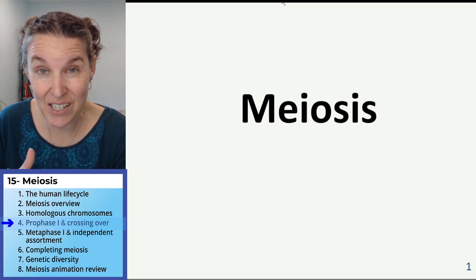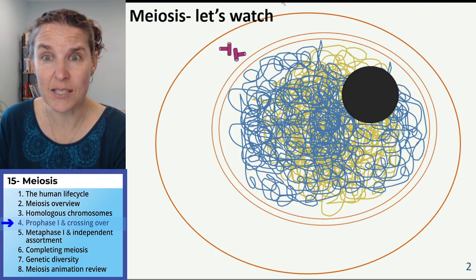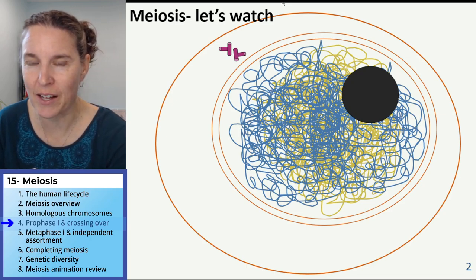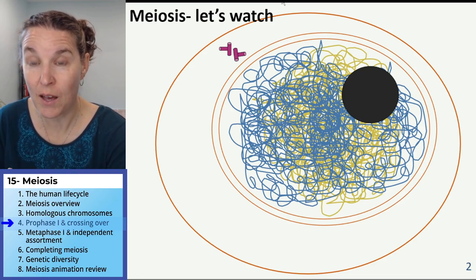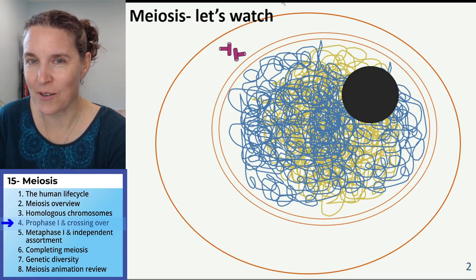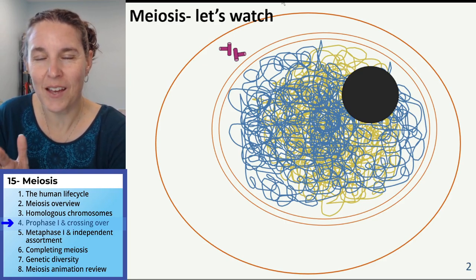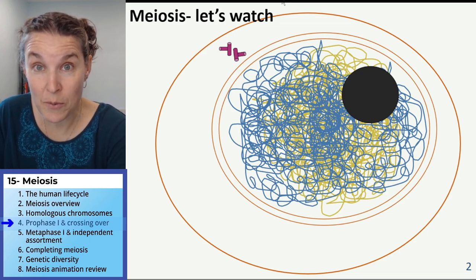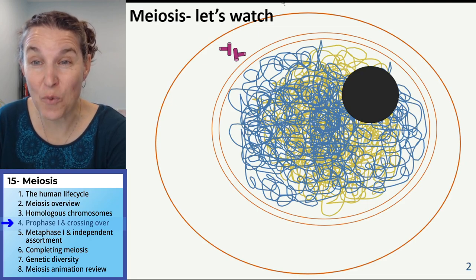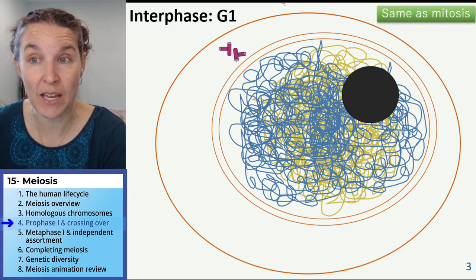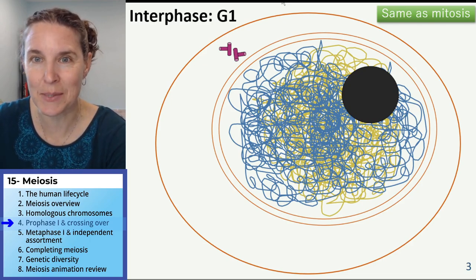To get us here to prophase I of meiosis, does this look familiar? We're just going to throw the scrambled cell. I think I changed the color of the DNA just for fun. If we watch meiosis happening, we can go through all of our stages of interphase — this is exactly the same as in mitosis.